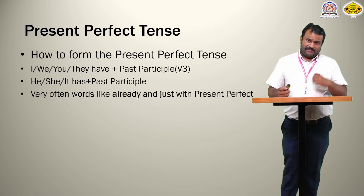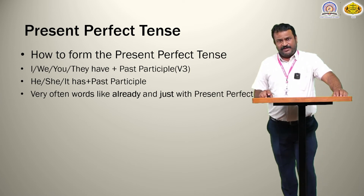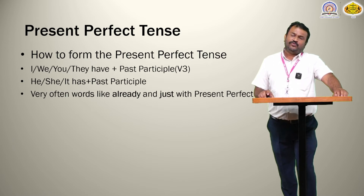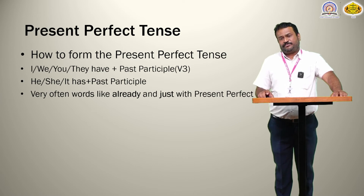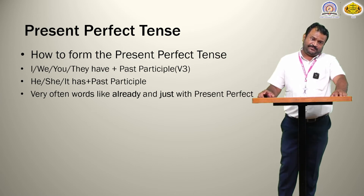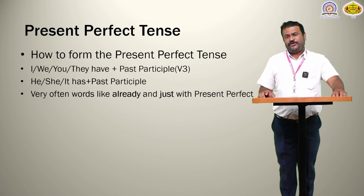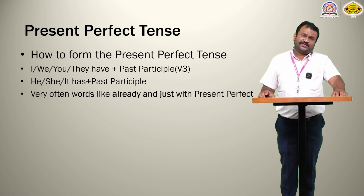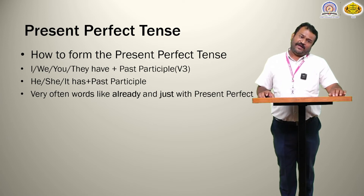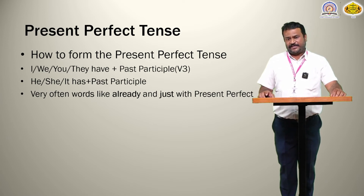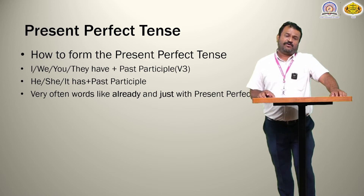Then comes the present perfect tense. The formula is very simple: I, we, you, they — have plus past participle, which is the third form of the verb. We use 'have' for I, we, you, they. And when it is the third person singular, we use 'has' instead of 'have': he, she, it — has plus past participle. We also use 'already' and 'just' with the present perfect.